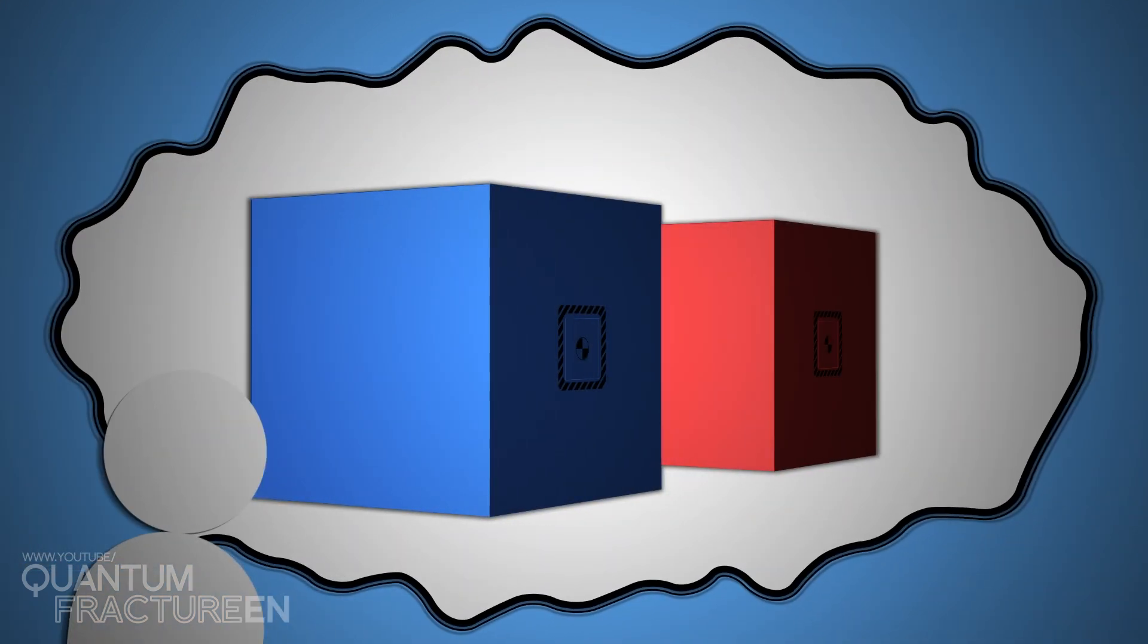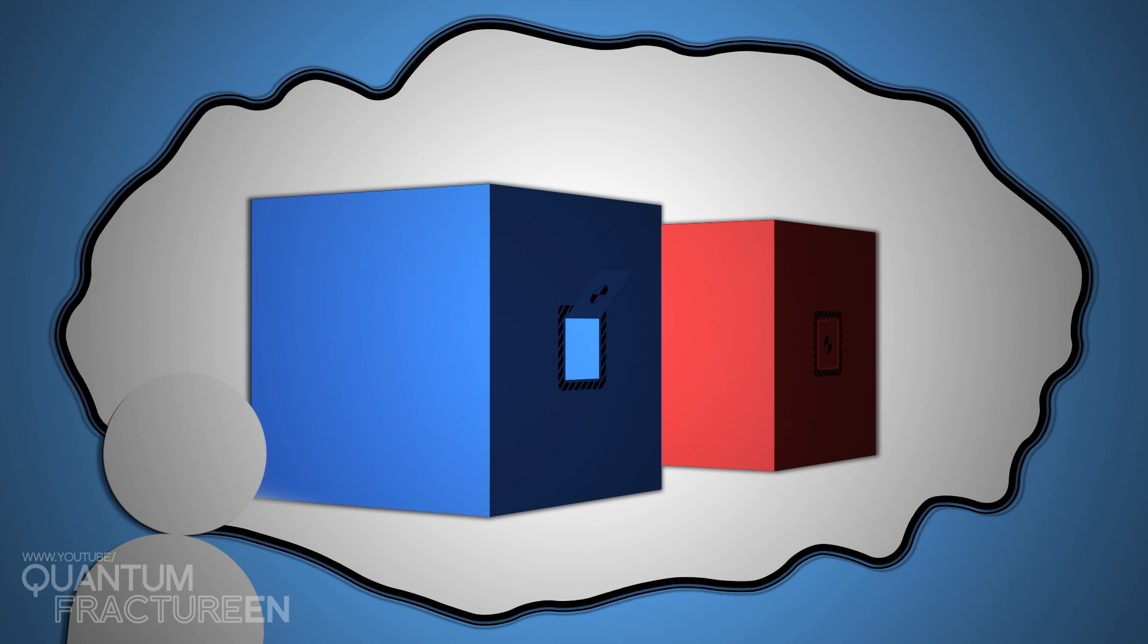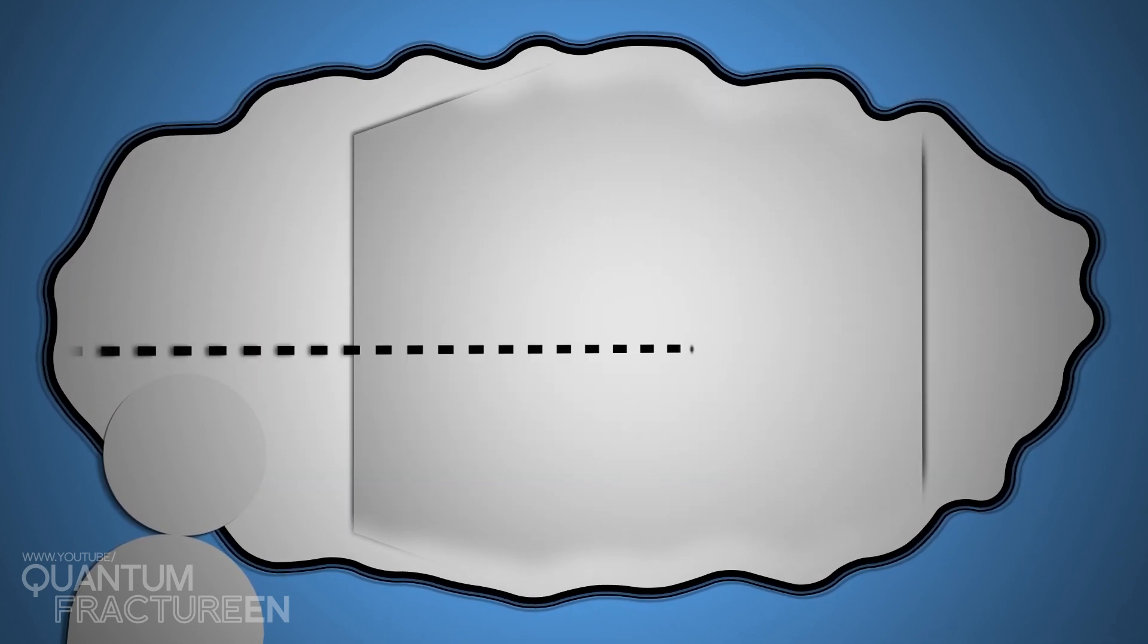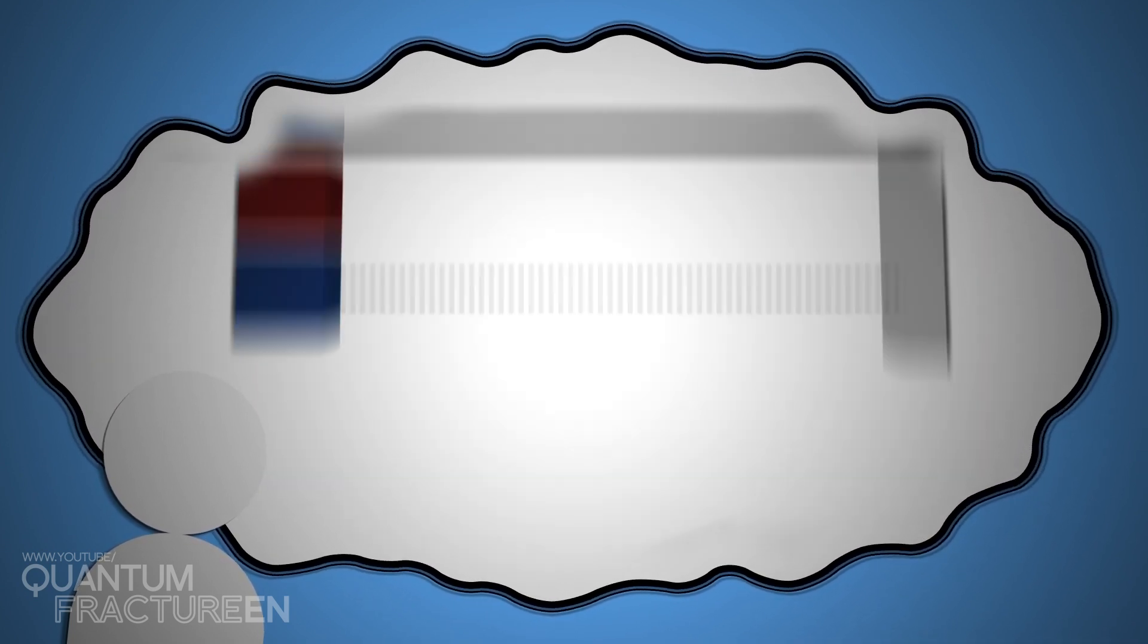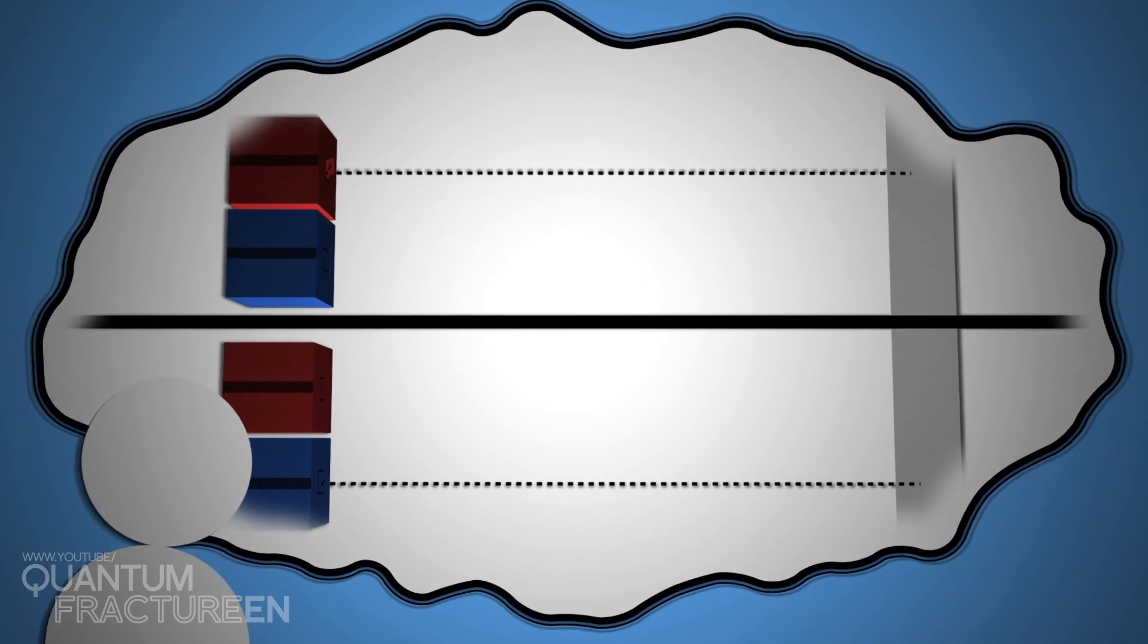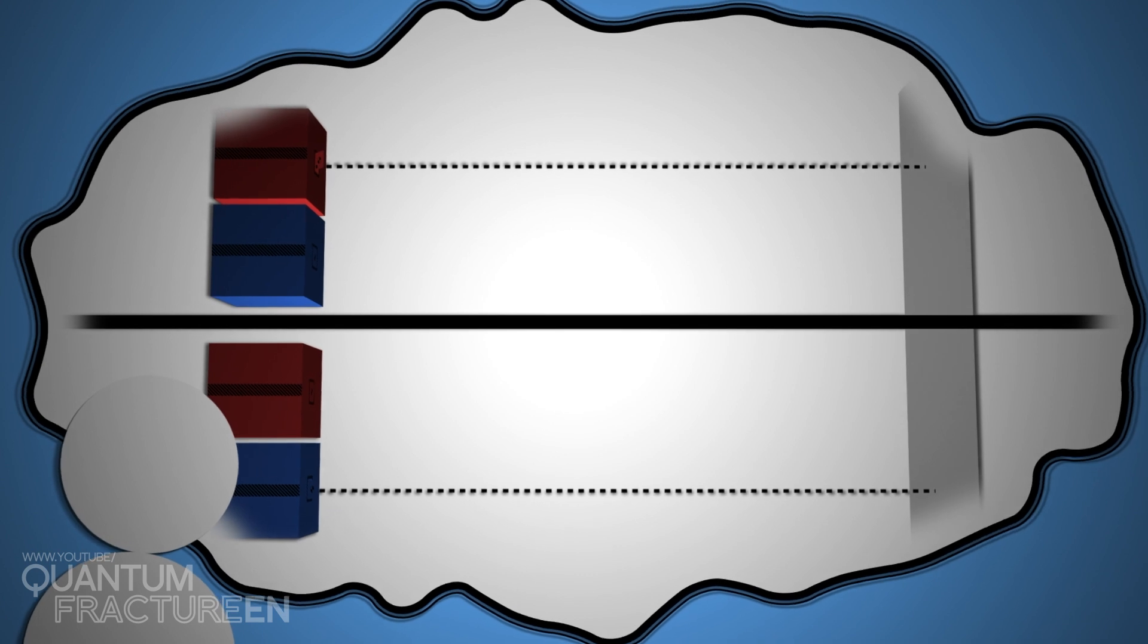It's pretty clear what happened here. When we opened the box where the atom was, it shot out and hit the screen. When we opened the empty box, nothing happened. Sometimes it was in the red box, sometimes in the blue. Because obviously, the atom couldn't have come from both boxes, right?